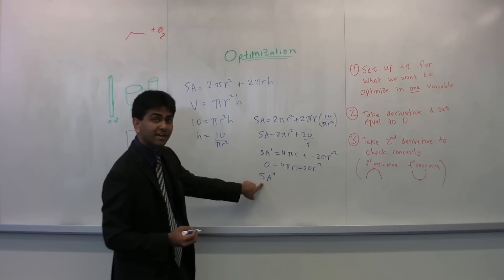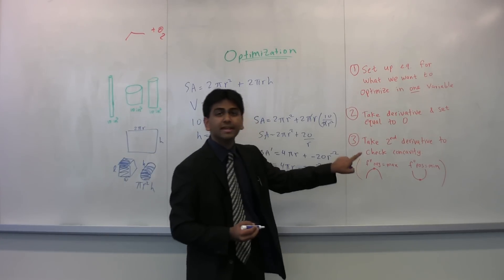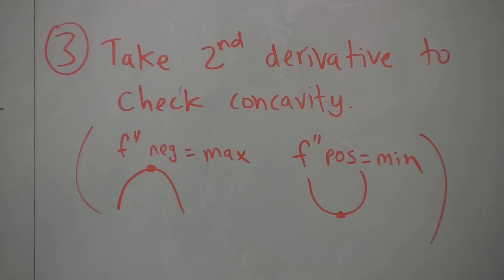And you just have to notice if S a double prime is a positive number or if it's a negative number. If it's negative, then that means that it's concave down and that your optimal quantity is a maximum, and if it's actually positive, then it's concave up, and so your optimal quantity is a minimum.